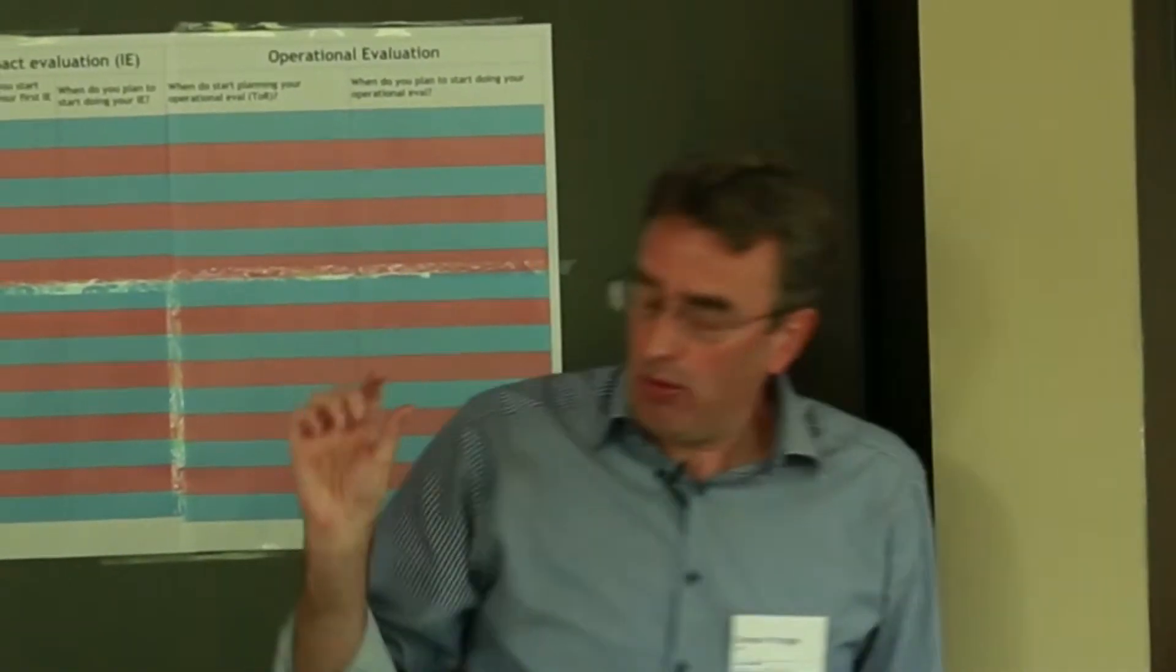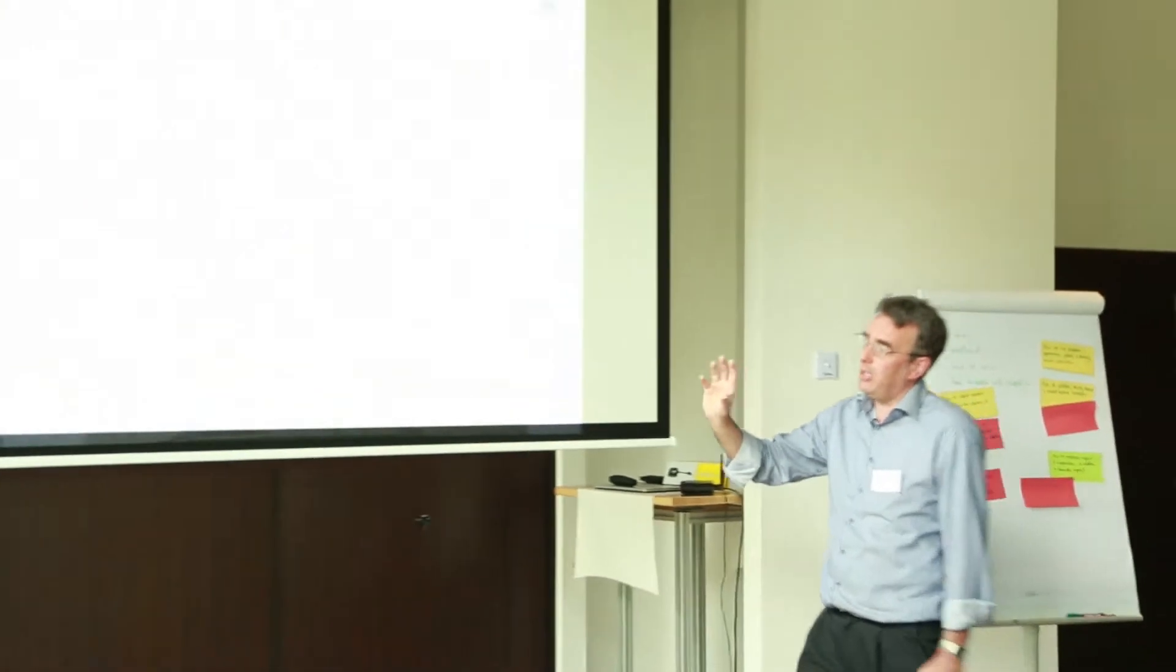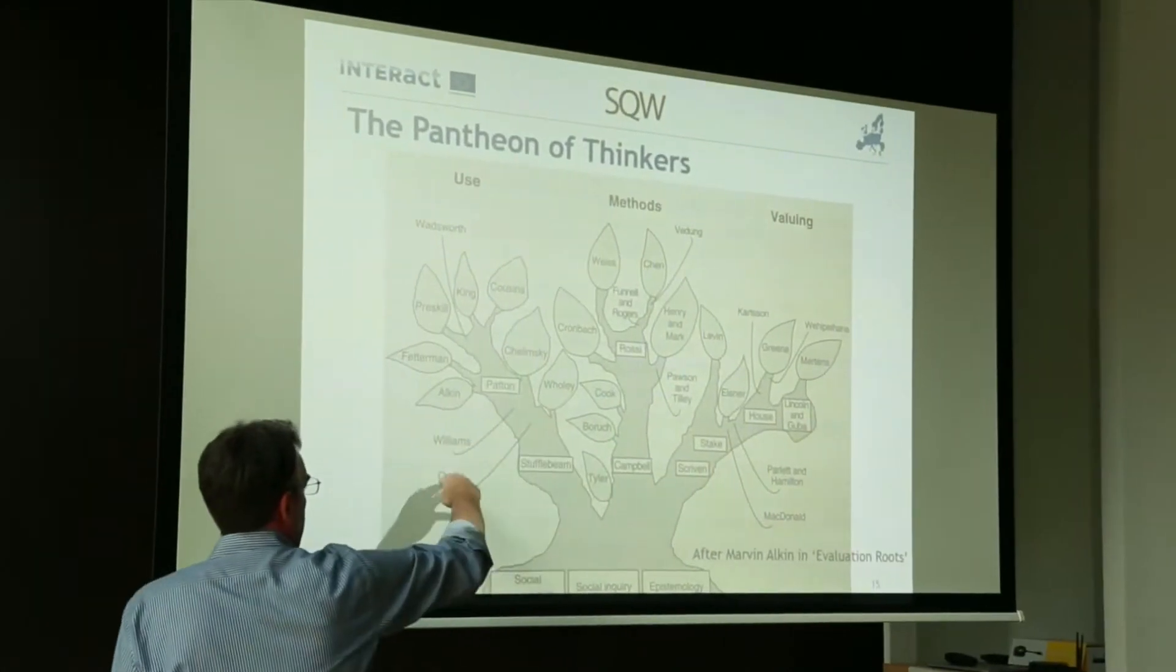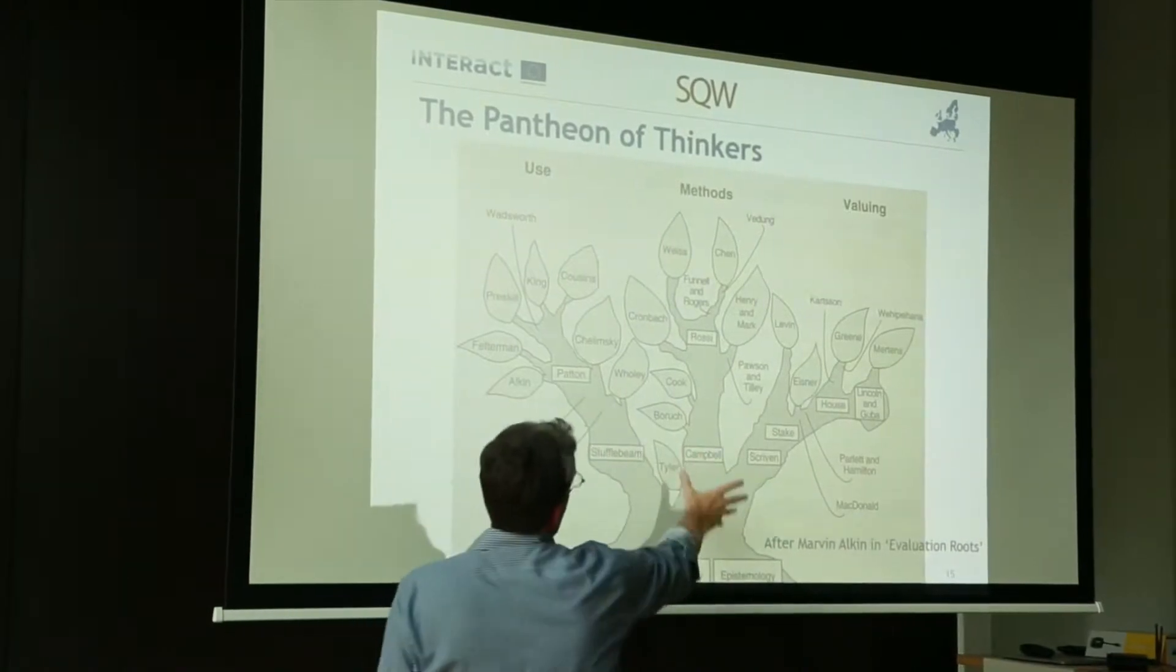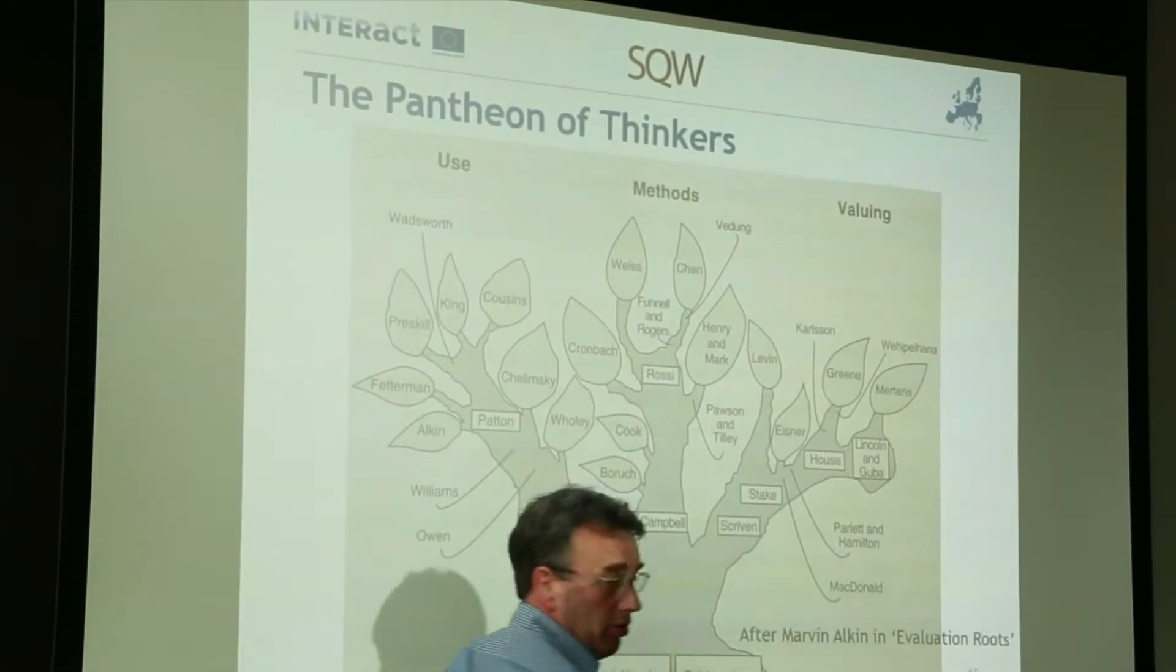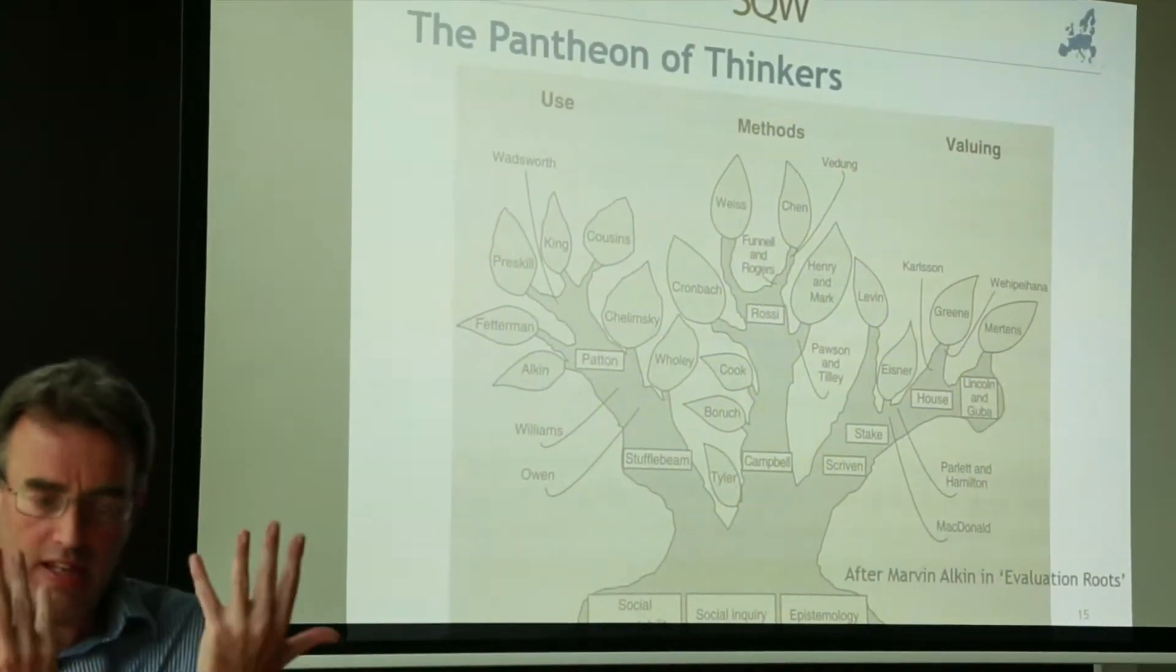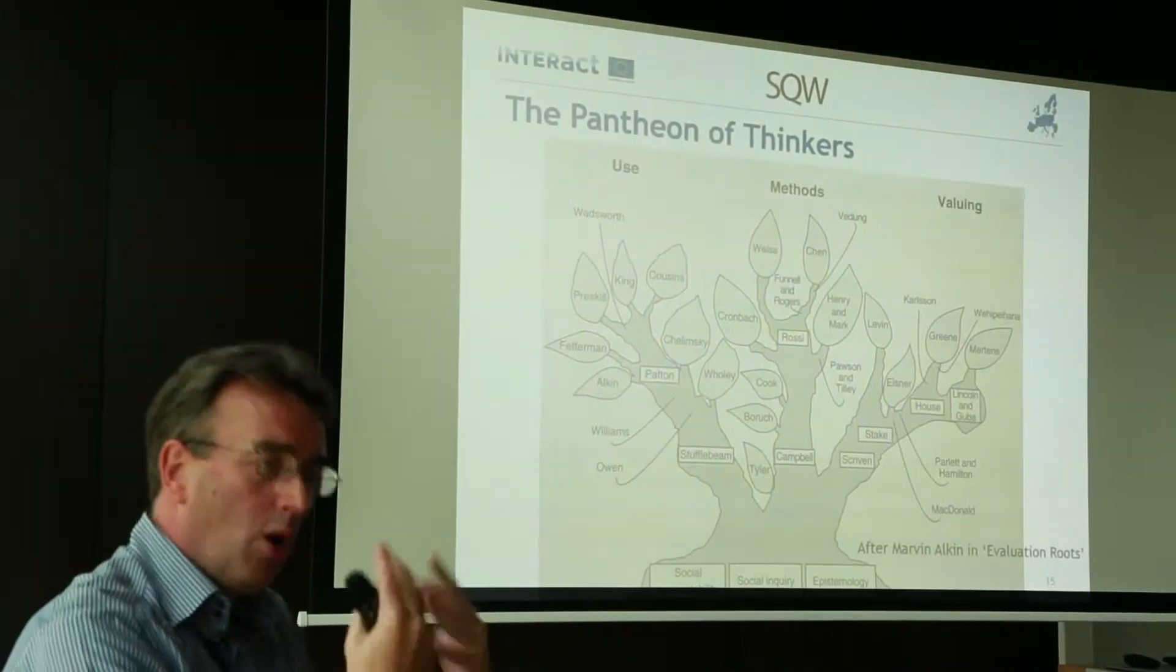And that little what they call the evaluation tree just gives you a flavor. These are all essentially academics who this last 30-40 years have developed thinking of evaluation in terms of its use. These folks around here, folks like Dave Williams, folks like Malvin Alkin, or methods - how you evaluate, how you develop evaluation methods, or how you actually when you do evaluate start to put values on things. And that pantheon of thinkers, that tree diagram of evaluators' names, that essentially is the scientific population of thinkers, philosophers, developers who this last 40-50 years have really moved evaluation thinking on.